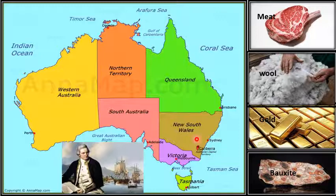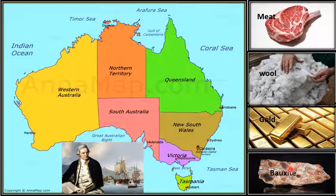Australia is also one of the richest countries in the world. It is one of the largest producers of wool, meat, gold, bauxite, and several other minerals. That is why Australia enjoys a high standard of living.